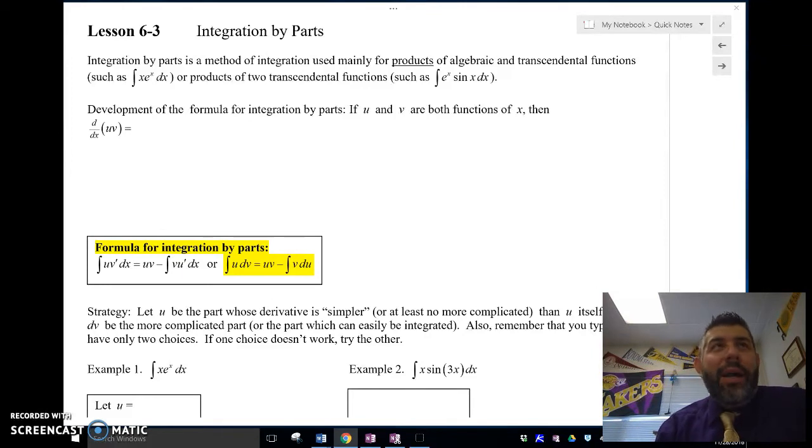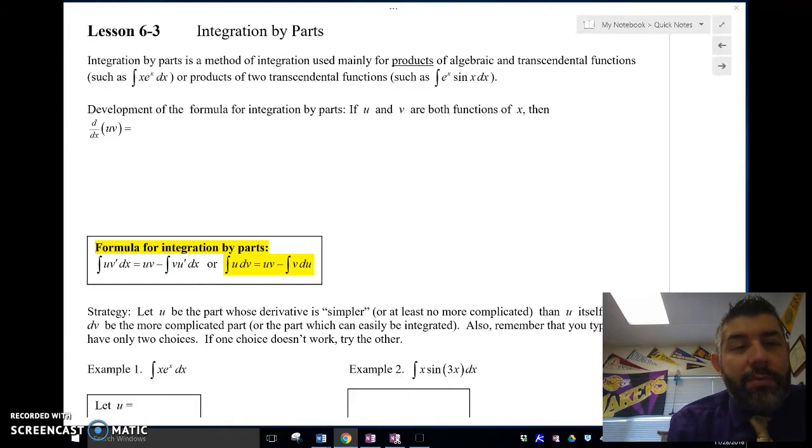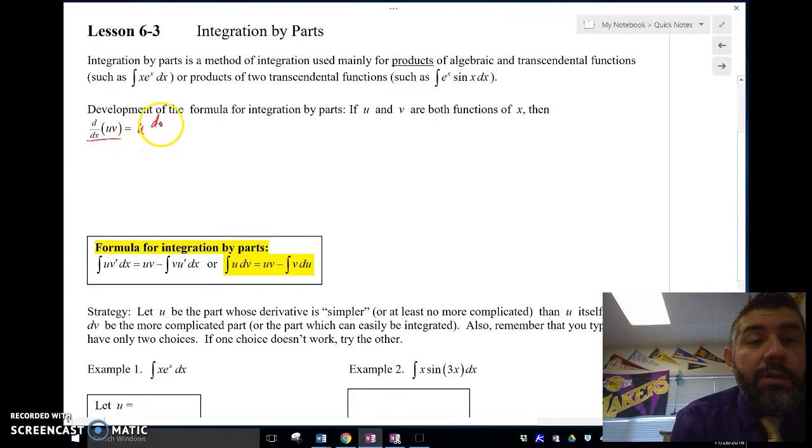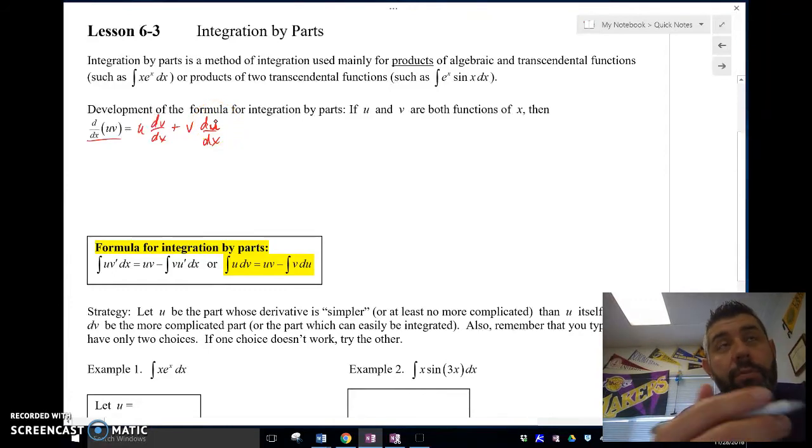Think of it as a backwards product rule, is basically what it is. So let's take a look first, how do we get it? I'm just going to start with d/dx of u times v, which is a product. If I'm doing that, I'm going to get u dv/dx times v plus v times du/dx. I'm using product rule.